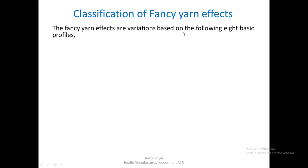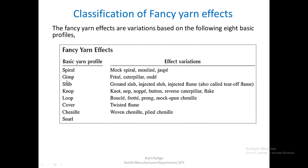Fancy yarns can be classified into eight basic profiles: spiral, gymp, slub, knop, loop, cover, chenille, and snarl. Each of these yarns has different effect variations and may be called by many different names — for example, spiral can be mock spiral or jaspe, slub yarn can be made in a variety of ways, loop yarn may be called boucle, and there are both woven and split chenilles.